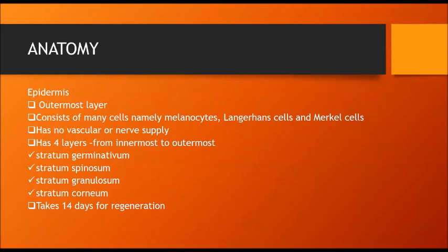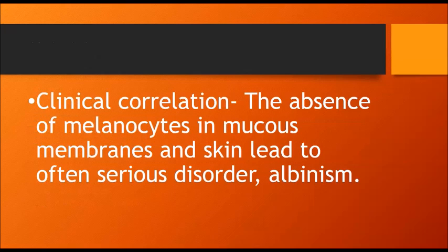The epidermis is the outermost layer. It consists of many cells, has no vascular or nerve supply, and has four layers from the innermost to the outermost. It takes 14 days for any skin damage to regenerate. Clinically, the condition albinism is caused by the absence of melanocytes in the mucous membrane and skin, due to their absence in the epidermis.